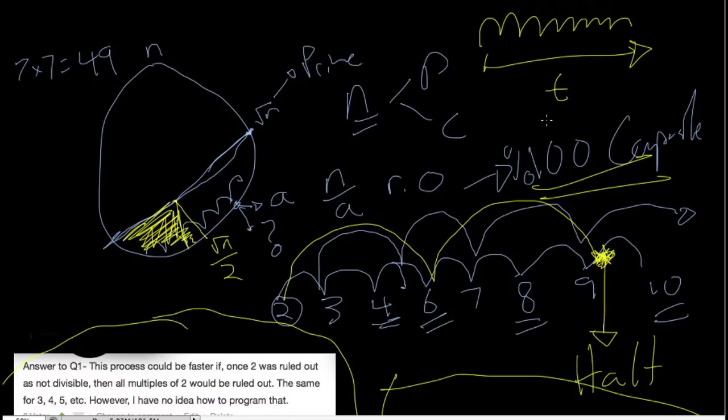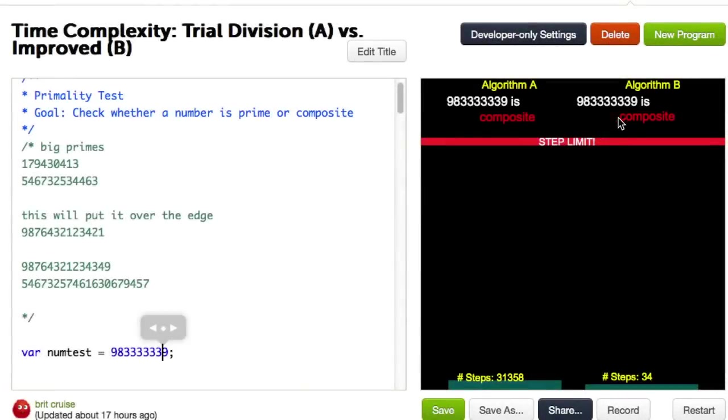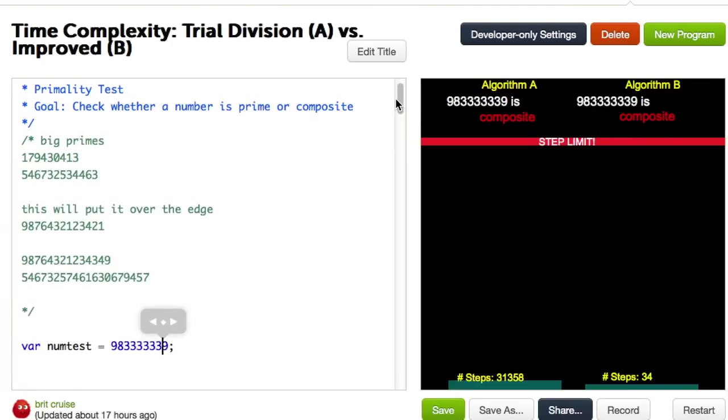So now I can show you the visualization I've set up below, which allows us to compare two algorithms based on how many steps occur during their execution. On the left is algorithm A, which is trial division, which checks from 2 to the square root of n. And on the right is algorithm B, which is, let's just say, our improved algorithm.